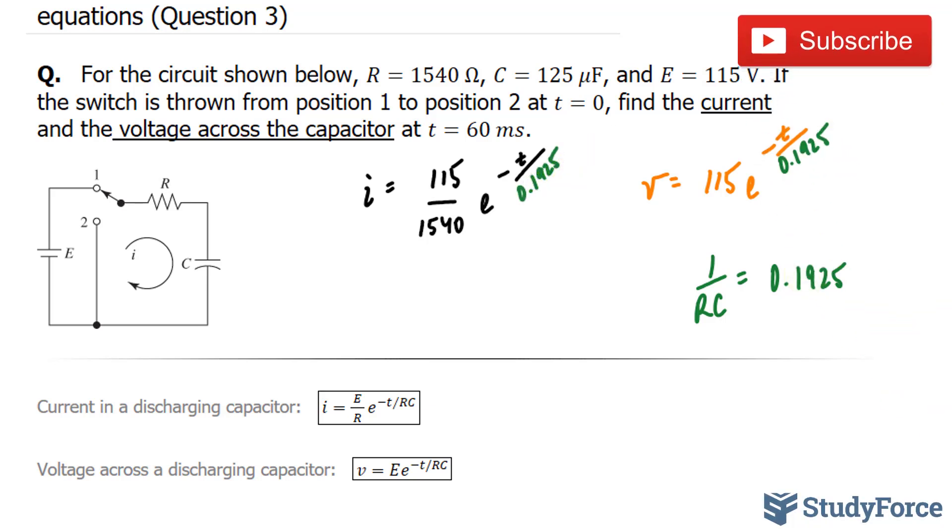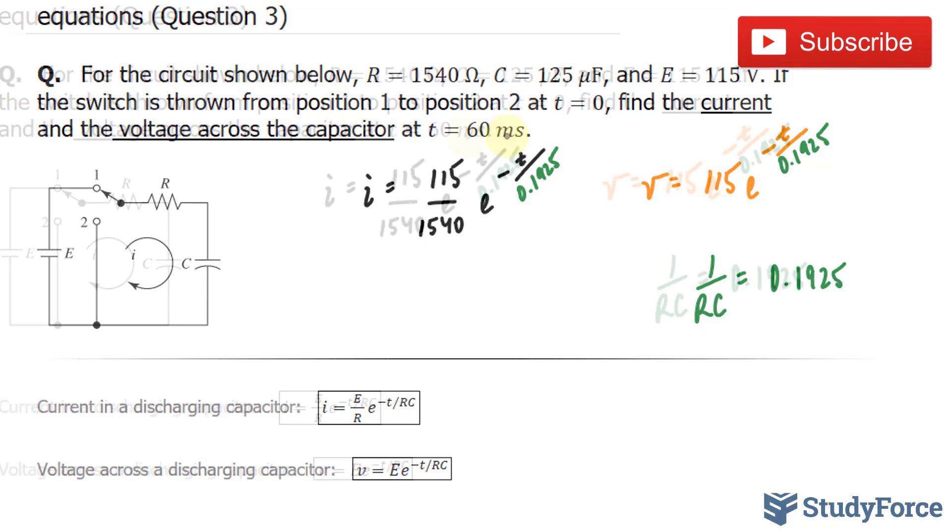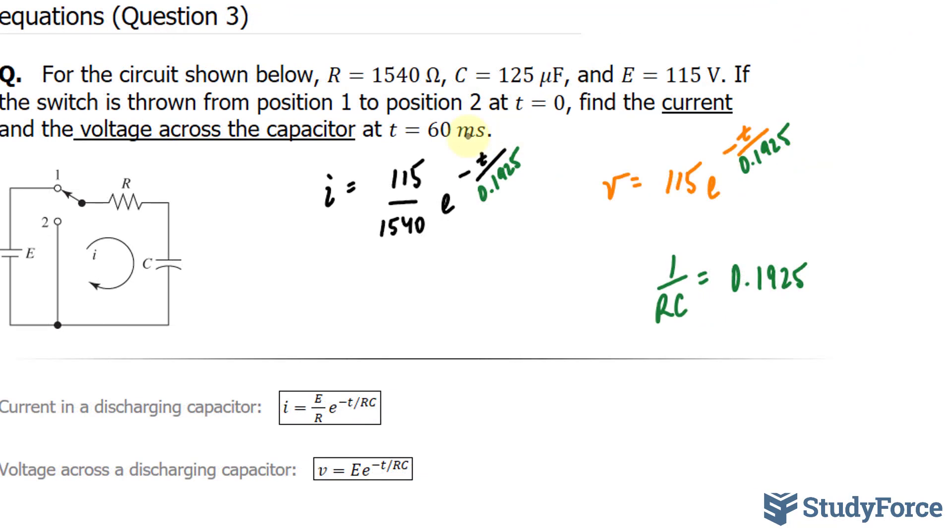Now that I've done that, I can substitute T is equal to 60 milliseconds. But instead of using milliseconds, I'll just use seconds. To go from milliseconds to seconds, I have to divide this number by 1000. So if I divide 60 by 1000, I'll end up with 0.060.